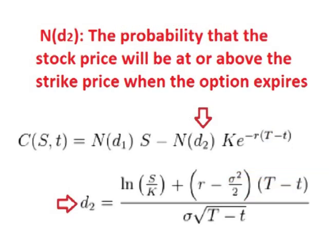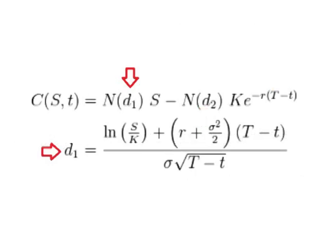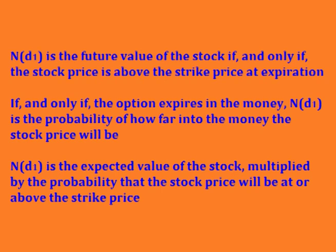ND2, the subject of this video, is the probability that the stock price will be at or above the strike price when the option expires. ND1 is what is known as a conditional probability. ND1 is the future value of the stock if, and only if, the stock price is above the strike price at expiration — in other words, if and only if the option expires in the money. ND1 is the probability of how far into the money the stock price will be, or alternatively, the future expected value of the stock multiplied by the probability that the stock price will be at or above the strike price.